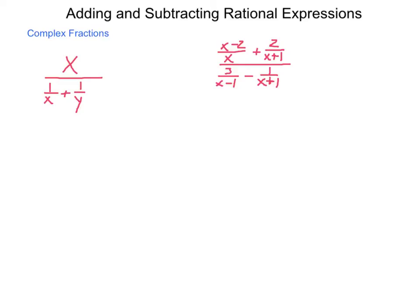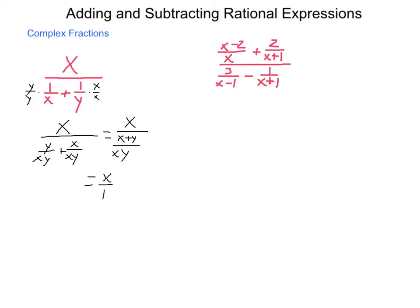The first thing we need to do is find a common denominator of our denominators. We have x divided by 1/x plus 1/y. For this set, I need to multiply by x over x for the second denominator, and y over y for the first one. That gives me x divided by y over xy plus x over xy, which becomes x divided by x plus y over xy. Now we're dividing by a fraction, so we multiply by its reciprocal: x over 1 times xy over x plus y.